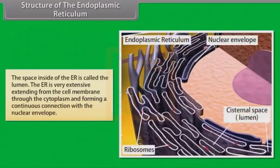The space inside the ER is called the lumen. The ER is very extensive, extending from the cell membrane through the cytoplasm and forming a continuous connection with the nuclear envelope.